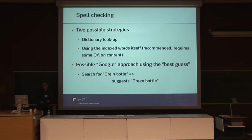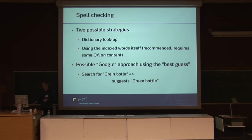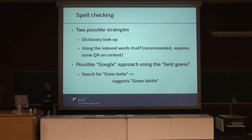Spell checking is provided in two different strategies. You can provide a dictionary yourself with all kinds of terms, or you can use the indexed terms inside the search index. The latter is recommended, because if you have a site with proper names or expressions that are not common, you will not find them in a normal dictionary. But since they are part of the content, the spell check becomes much more relevant and complete. It is also possible to ask for a Google-style best-guess approach, for example if you look for 'green bottle', it will try to put out an alternative phrase entirely.